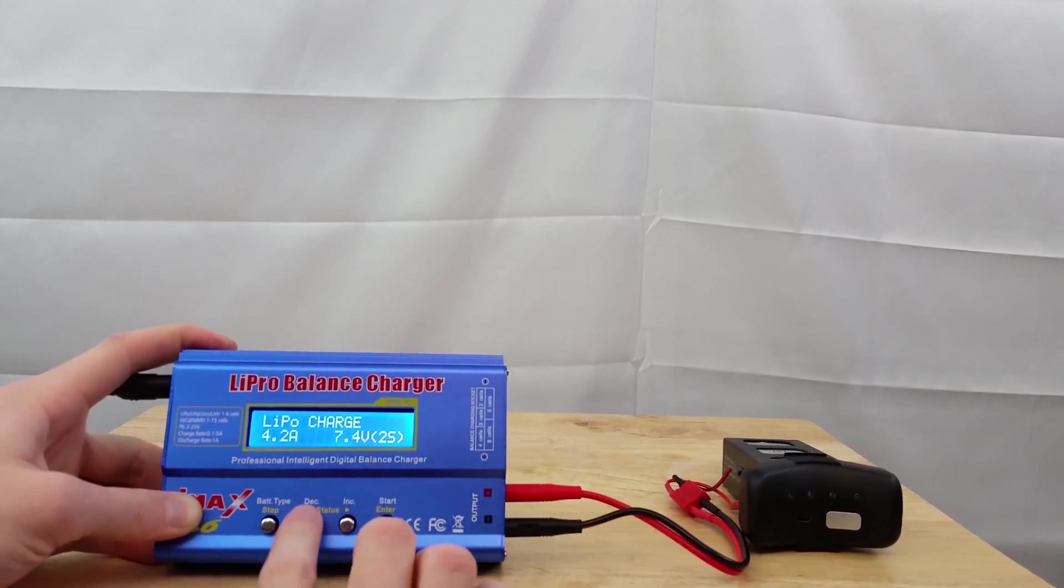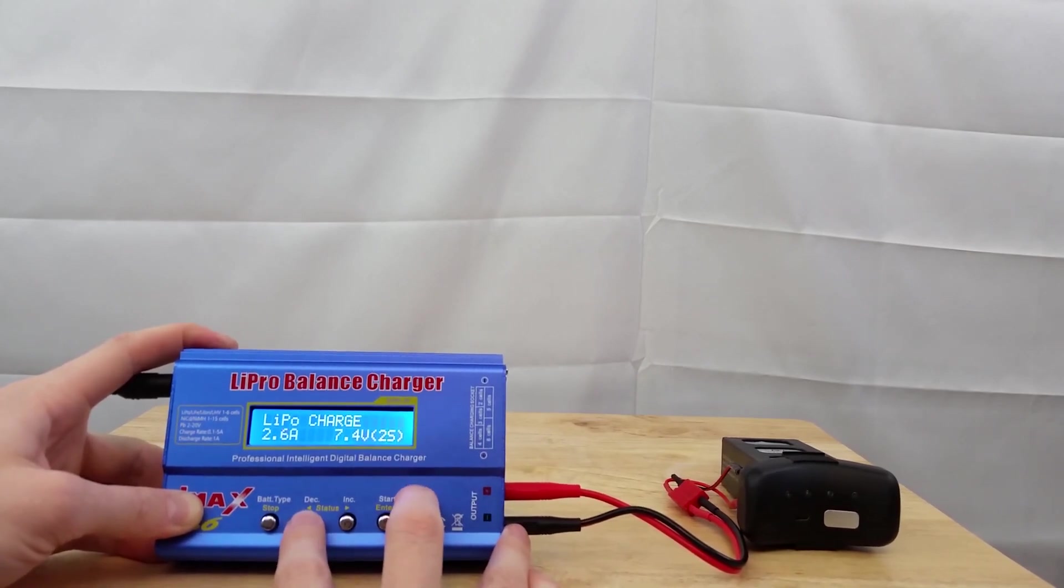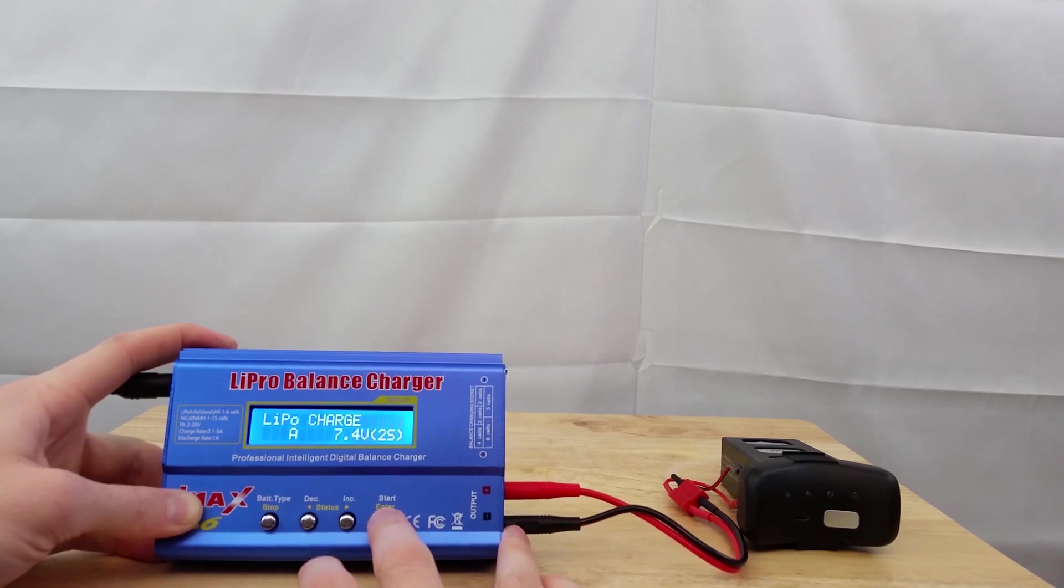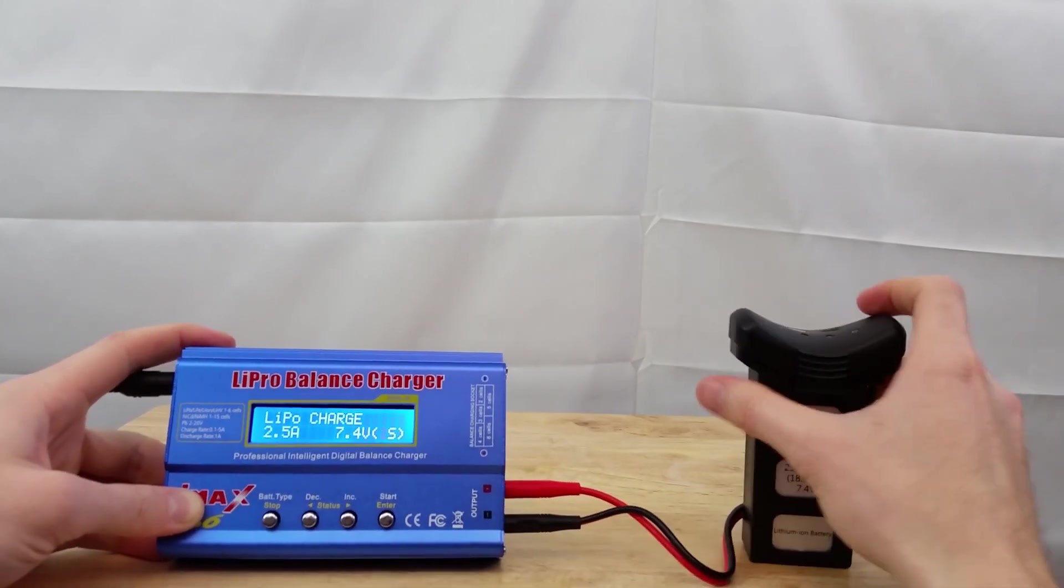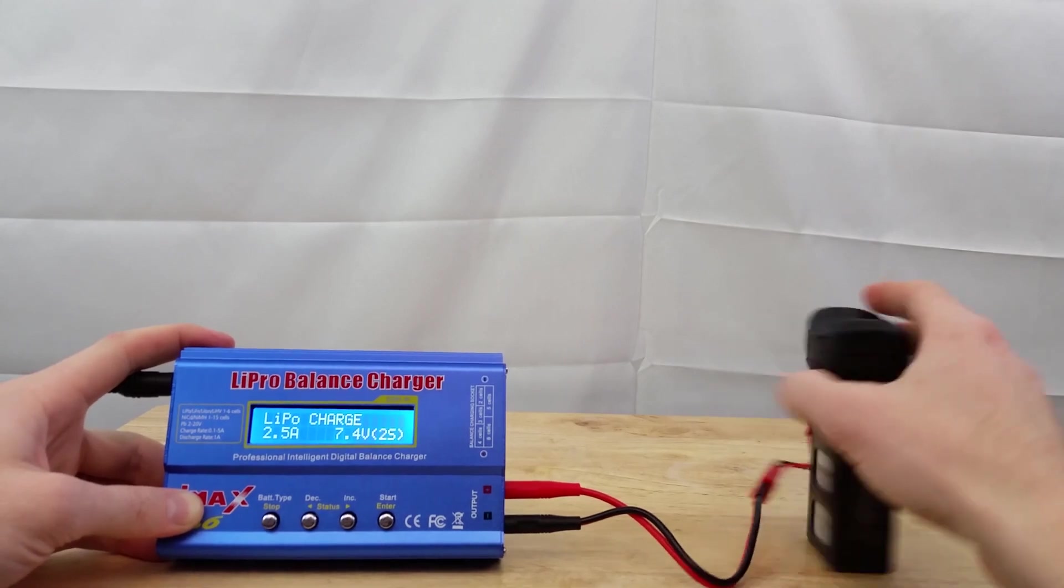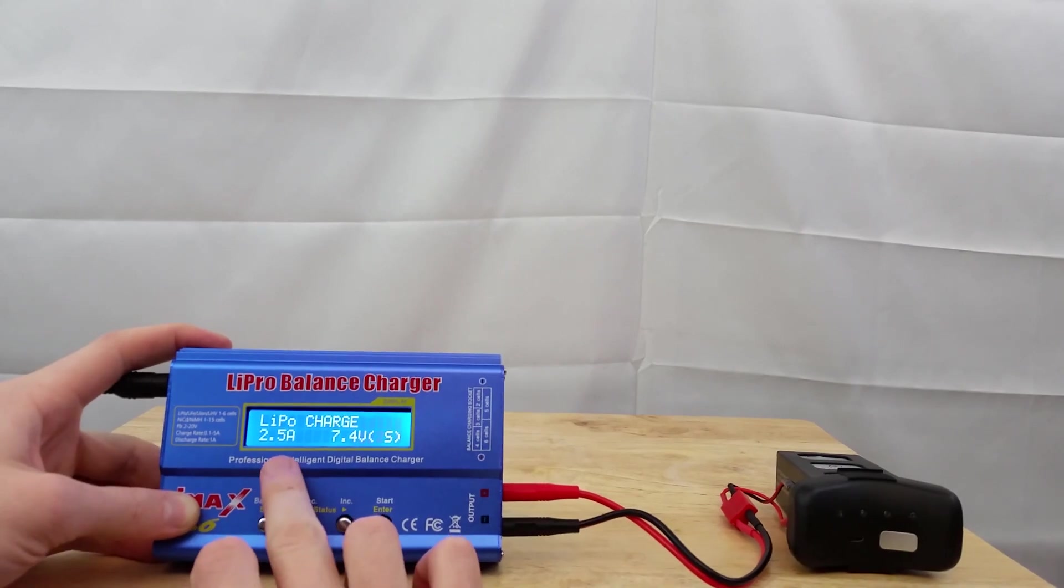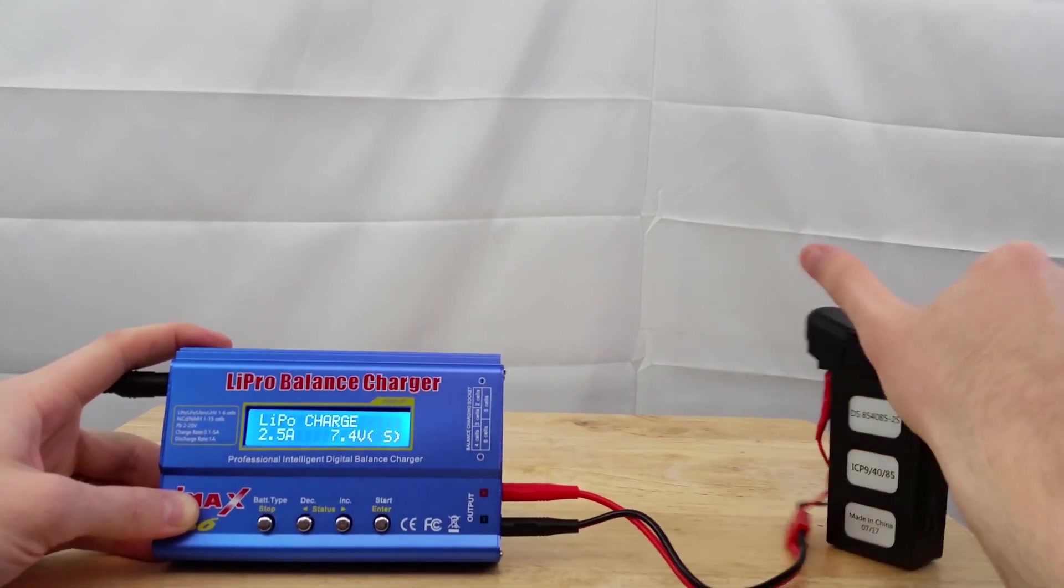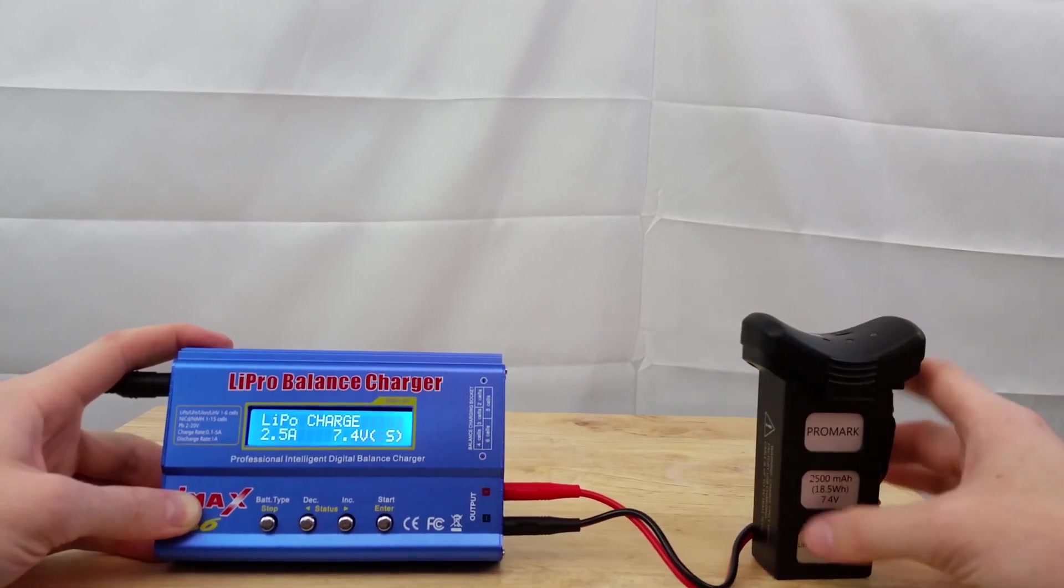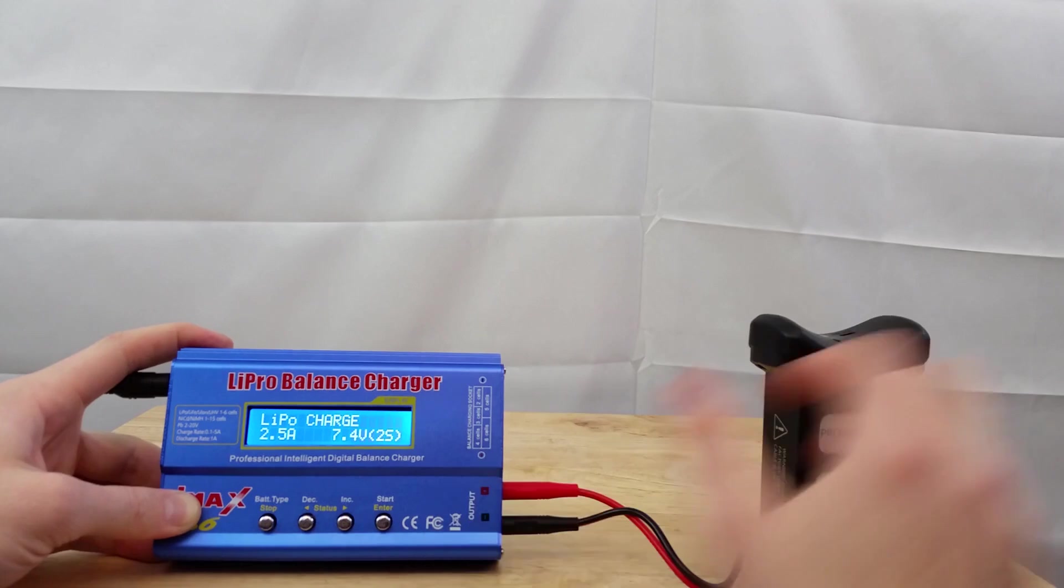Now you're going to change this to 2.5 amps. That's the safe charging rate of this battery that corresponds to the 2500 milliamp hours. 2.5 amps is the safe charging rate for this battery. Hit enter after you click on that. And this is a 7.4 volt battery. In other words, two cells in series. 7.4 volt. Click enter.